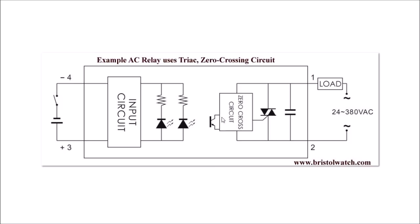In this case we have a photo detector, a zero crossing circuit, and a TRIAC which acts as a solid-state switch. AC relays might have zero crossing circuits or they might not, depending on the application.